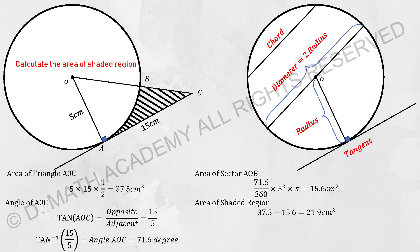So there is one more question here where it involves calculating the area of the shaded region. For you to calculate that, the first thing I did was to calculate the area of the triangle, which is 5 times 15 times half, you get 37.5.